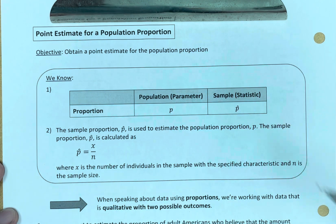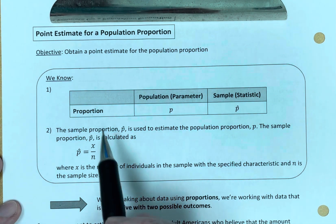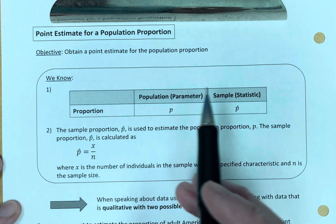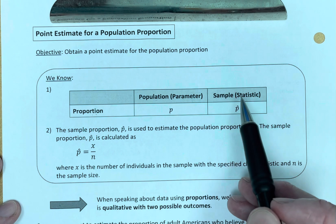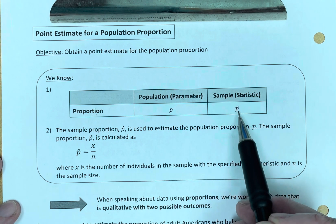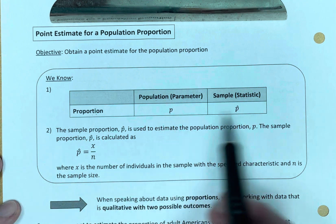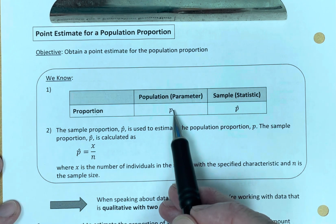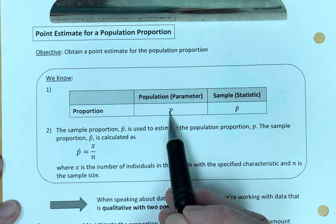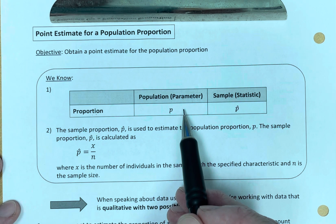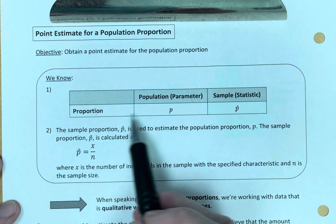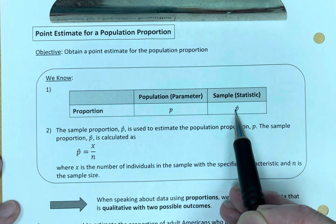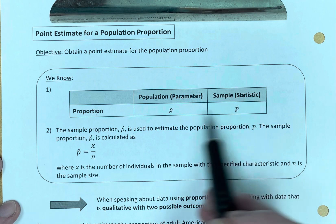Let's remind ourselves of a couple of things we already know. When we're dealing with proportions, for the population we use the letter P, and for the sample we use P-hat. Parameters are usually Greek letters, but the Greek letter for P is pi, and that gets confused with other mathematics. So we use P for the population proportion — the parameter — and P-hat for the sample statistic of the proportion.